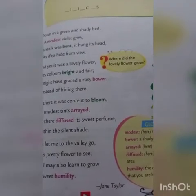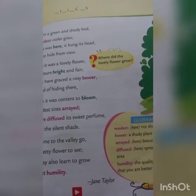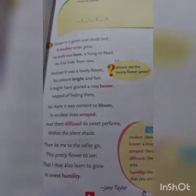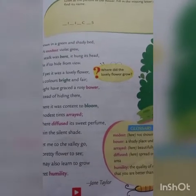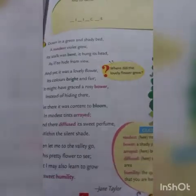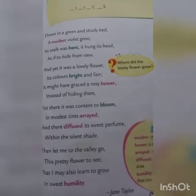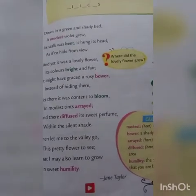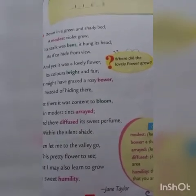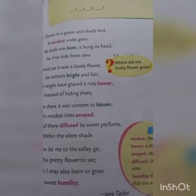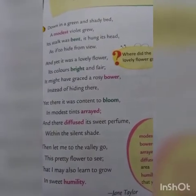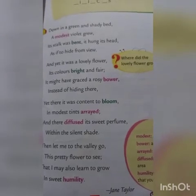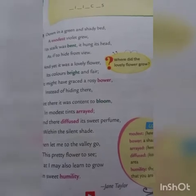Despite its beauty, the violet shows its humble character by bending its stalk down. The poem is about how beautiful the flower is and how it shows its politeness by bending its stalk down despite its beauty and beautiful fragrance — bending down to show its modesty. Once again, the poem is about the flower violet which is bent downwards to hide from the view of others.